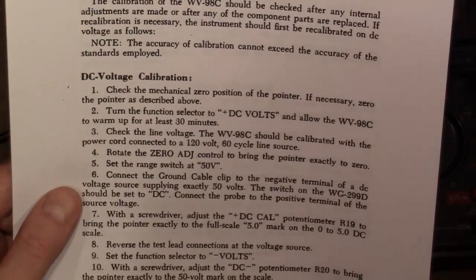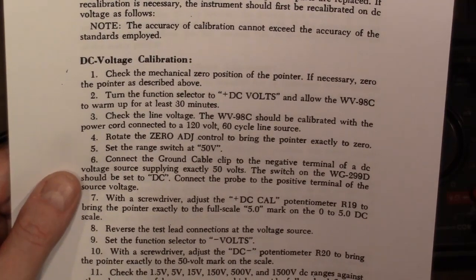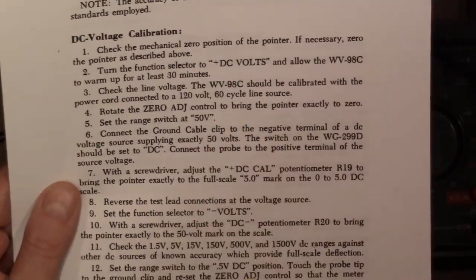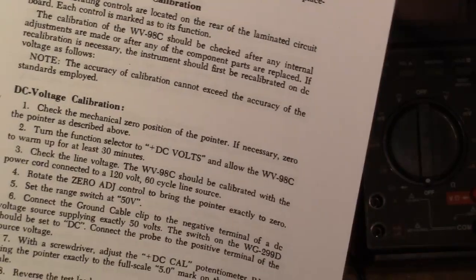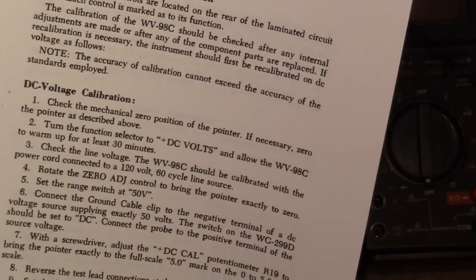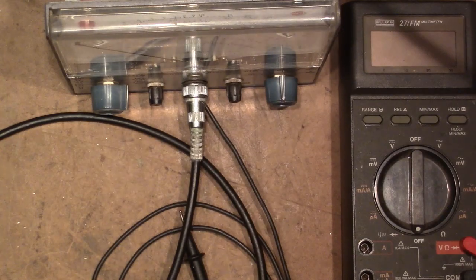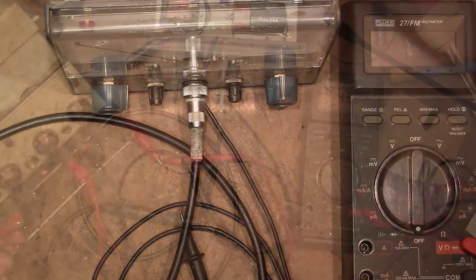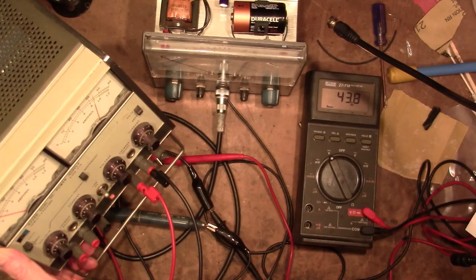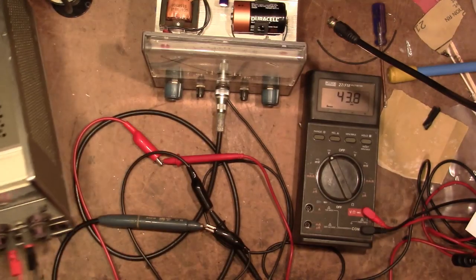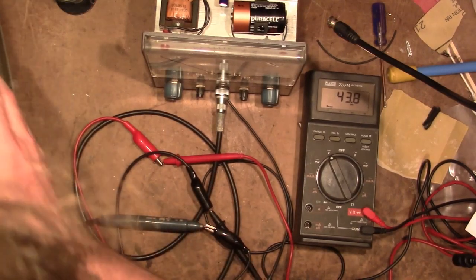So that's just checking some basic functionality that the meter is zeroed. And then we're going to calibration. And for this, I'm going to need to dig up a DC power supply. That can generate precise voltage. I just happen to have a 0 to 50 volt Hewlett Packard power supply I will be using. And I'll put this in parallel with the VTVM. To compare the readings.